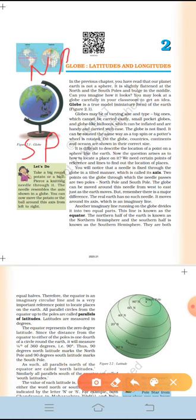And you must have noticed that a needle is fixed through the globe in a tilted manner which is called its axis. We are talking about this needle which you can see in the picture. So the way a globe rotates around the pivot, the Earth also rotates around an imaginary line and the imaginary line around which the Earth rotates is called the axis of the Earth.